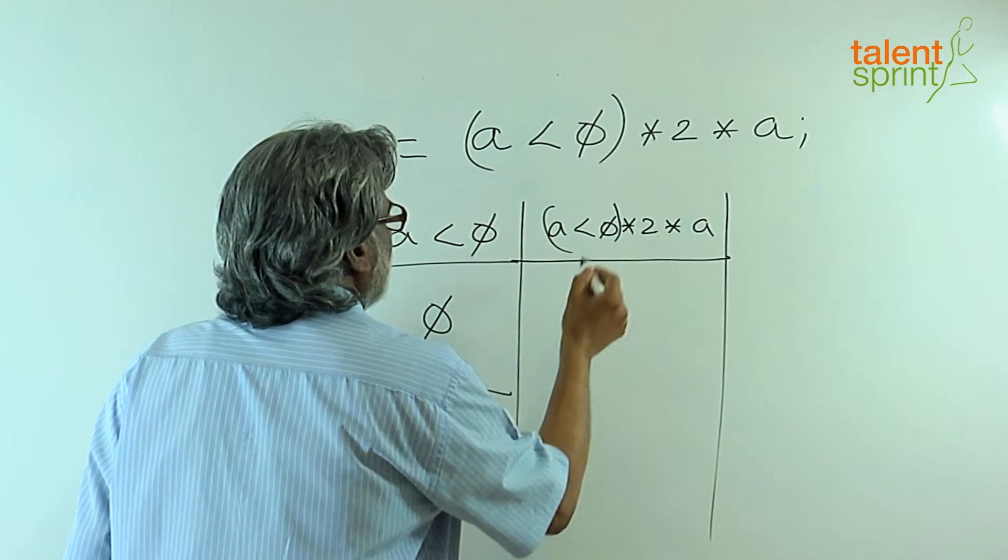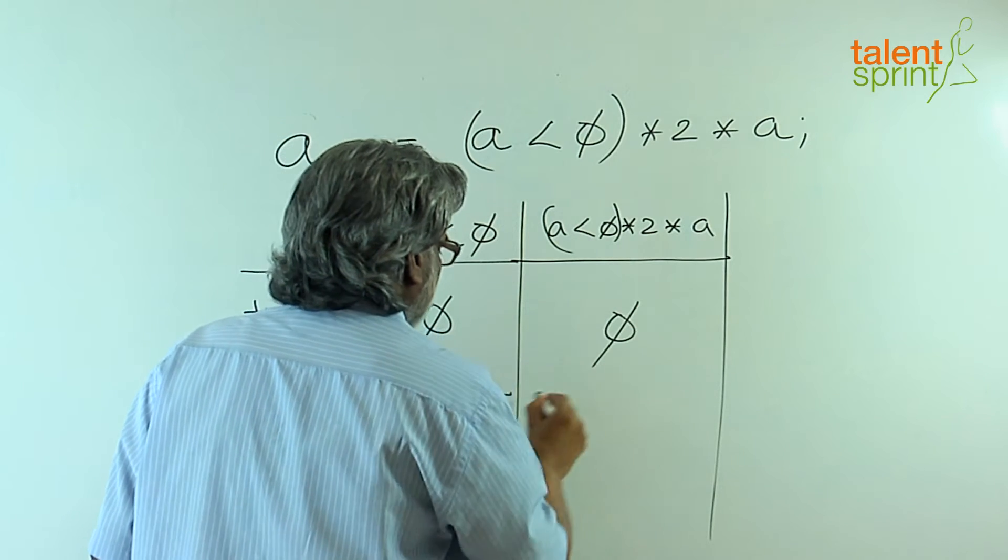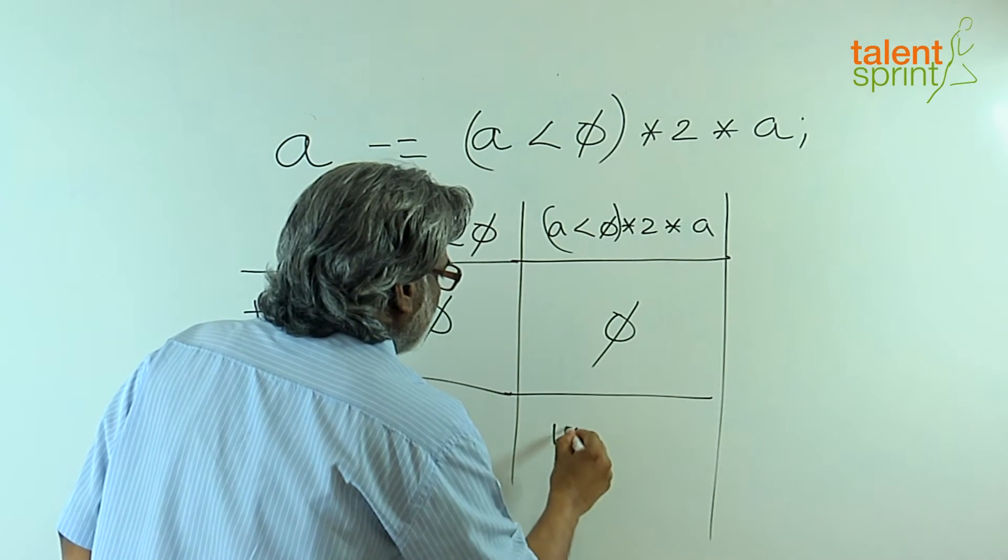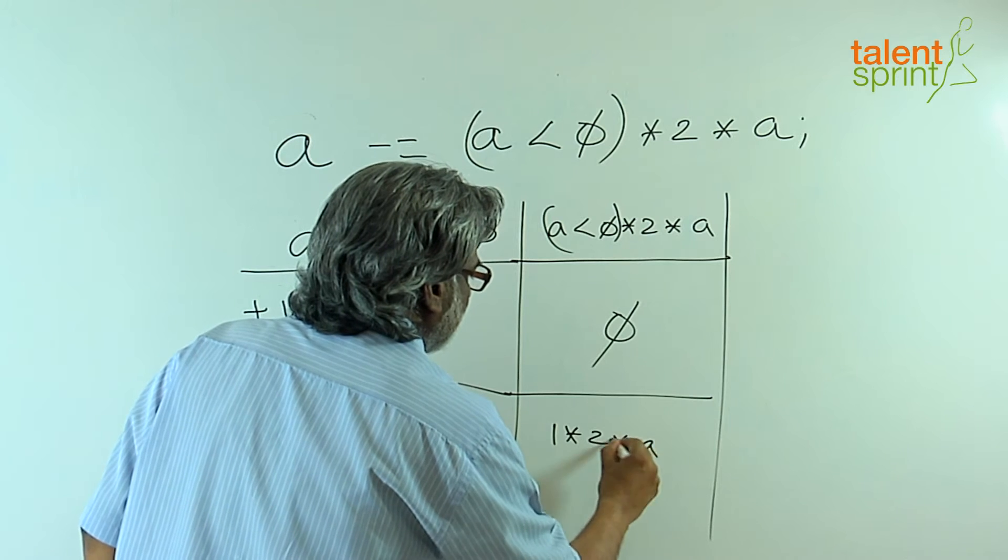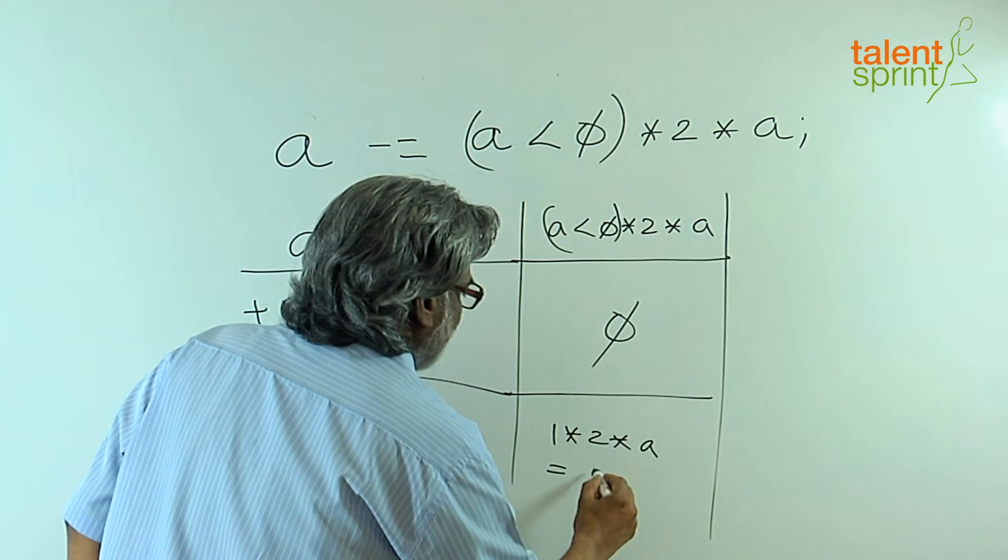So what about the rest of the expression? This translates to 0 into something into something which is 0. This translates to 1 into 2 into a, which is the same as 2a.